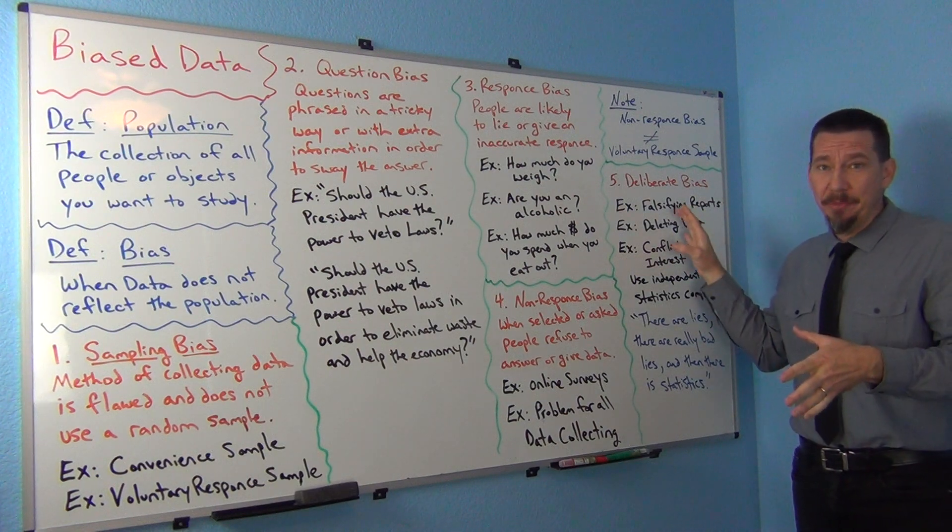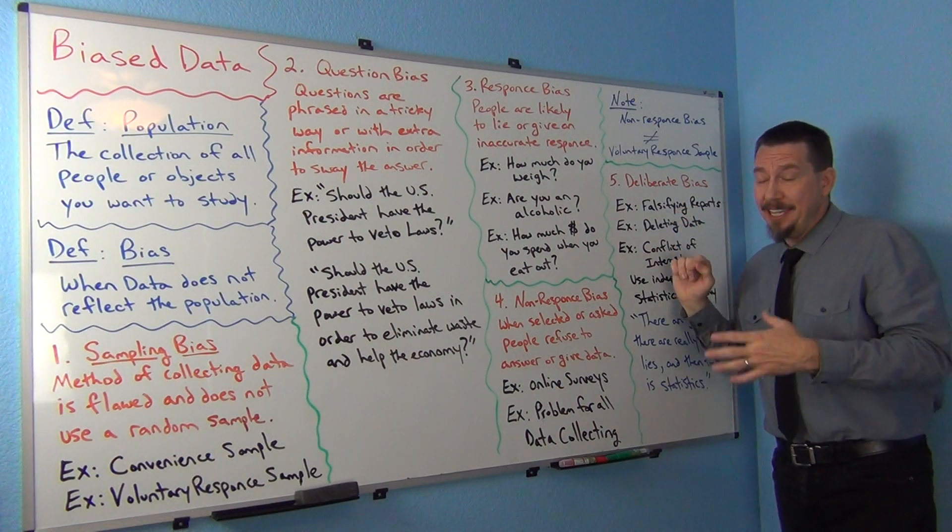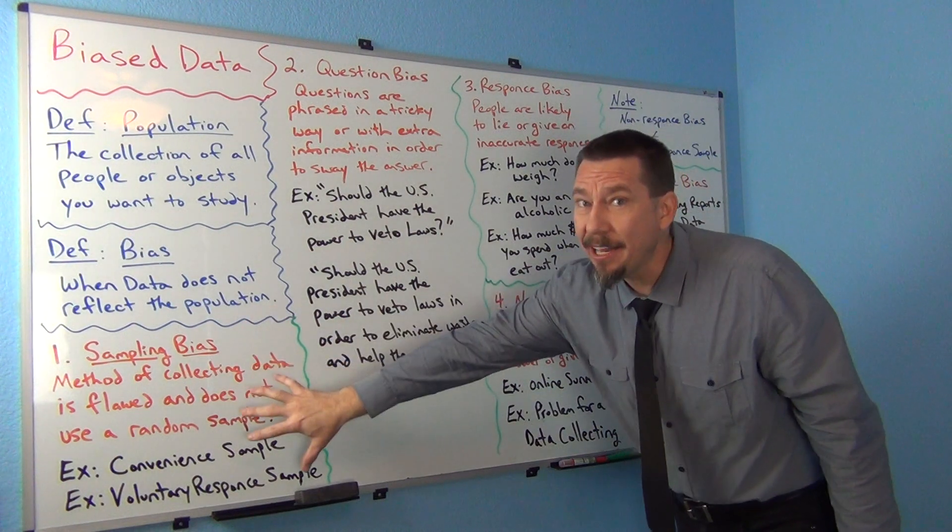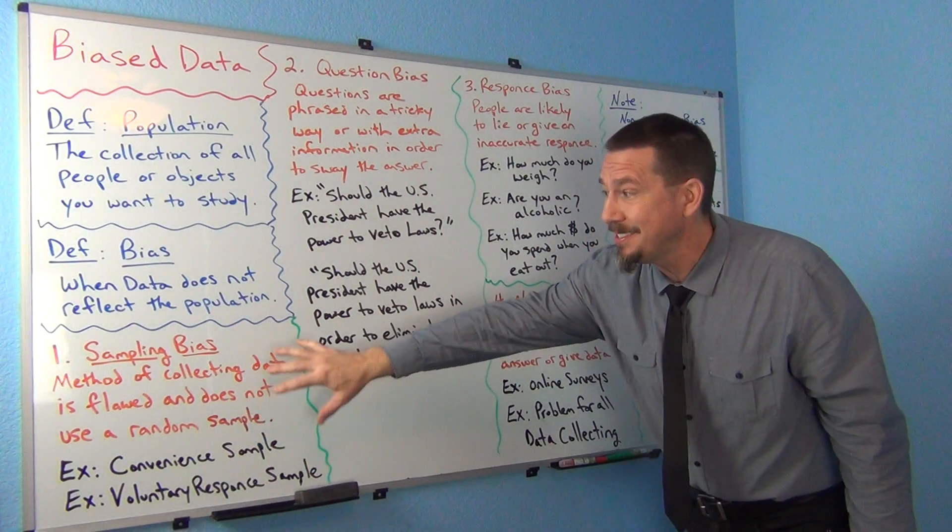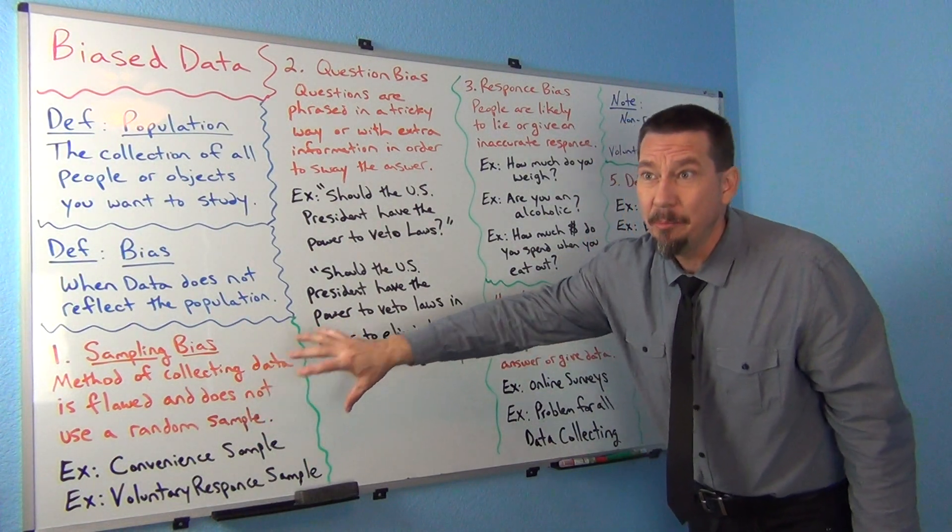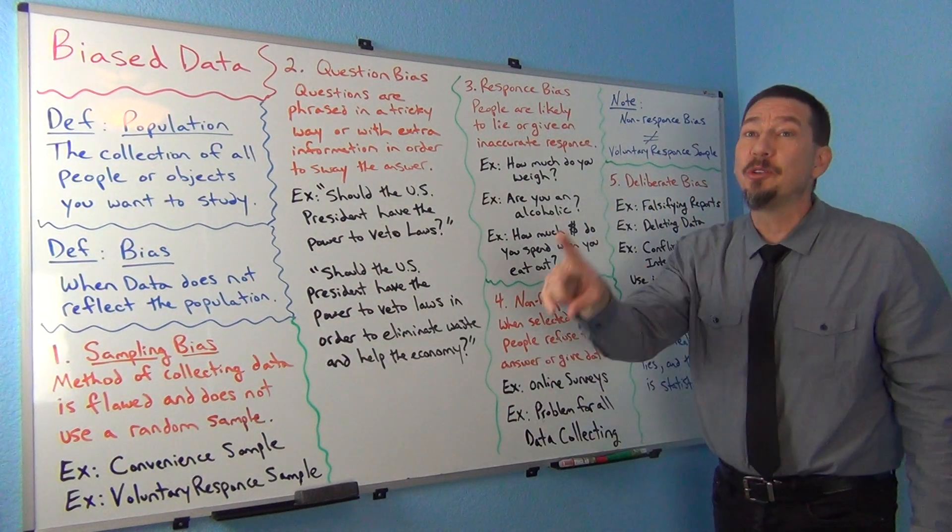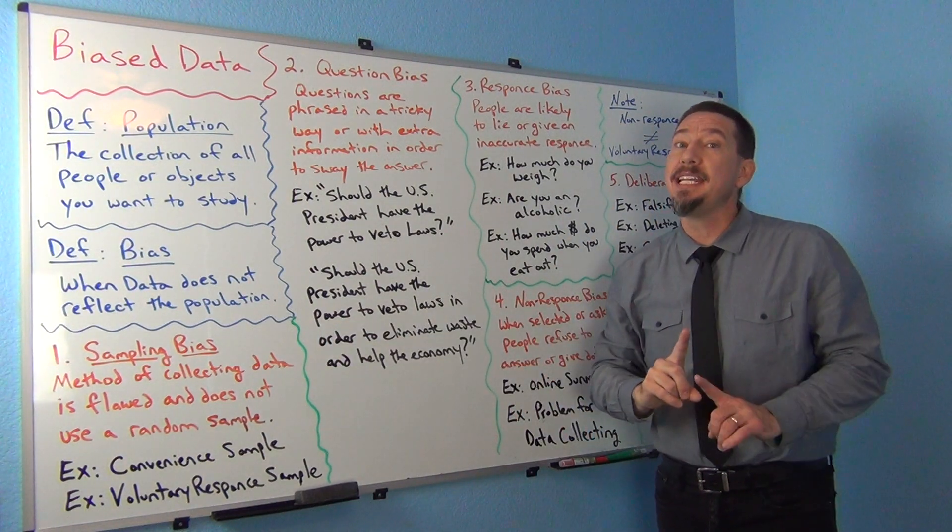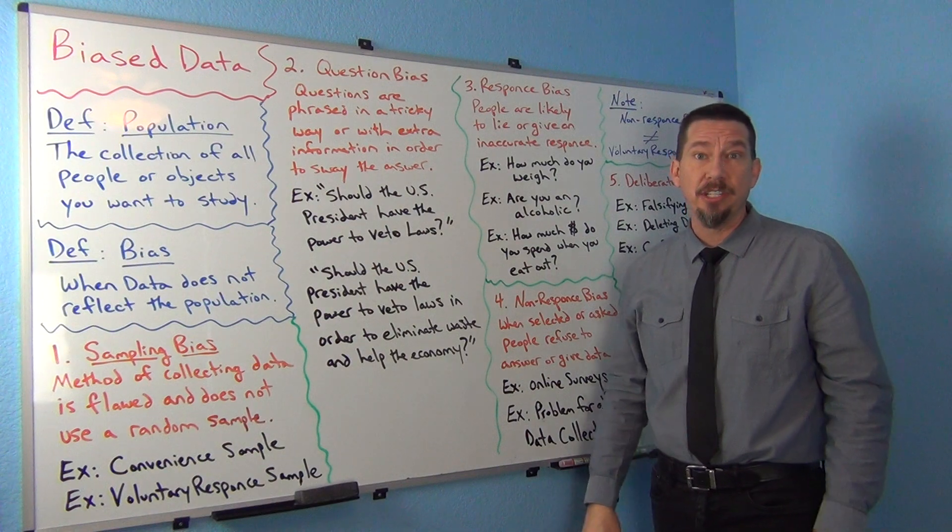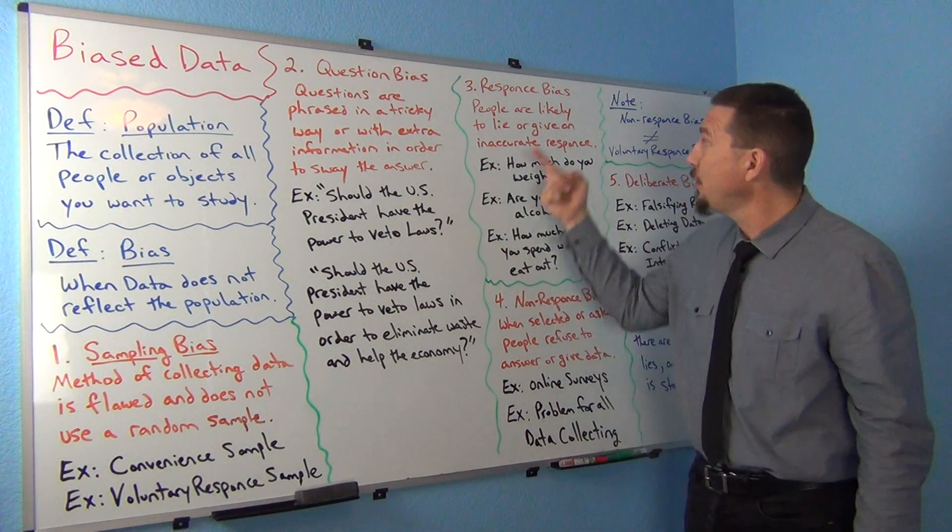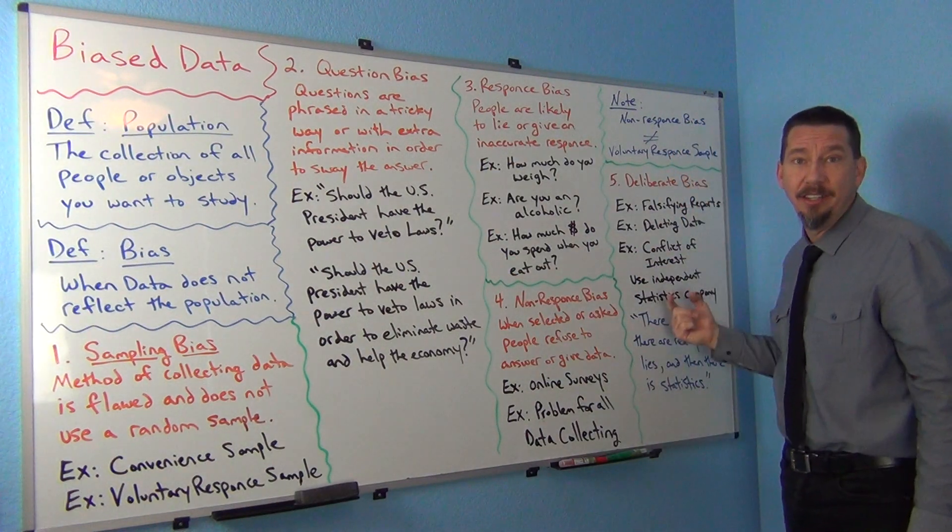So basically the takeaway from this is, yes, the way you collect data matters. You should have either a census or a random sample, but a census or a random sample does not guarantee that your data reflects the population because you could have one of these other biases going on. Something shady.